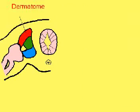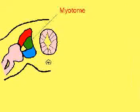Dermatome migrates into the skin to form the mesoderm of the skin — merely the dermis. The myotome forms the muscles of the trunk region.